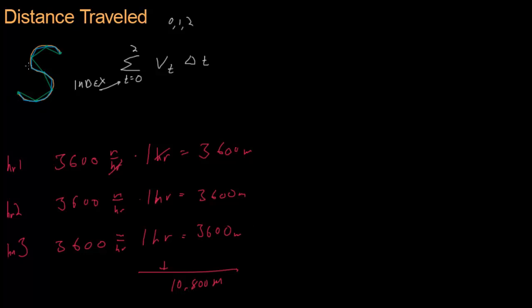Now, if we want to get more accurate, we want to follow something more like the blue line instead of the green line. Then we have to reduce this unit right here, the hours. Instead of hours, we're going to use seconds. Seconds are much more precise than hours are.